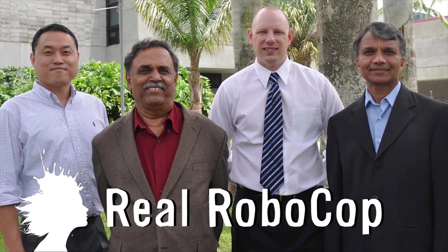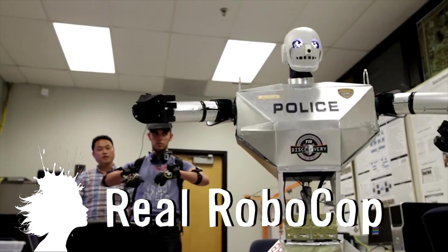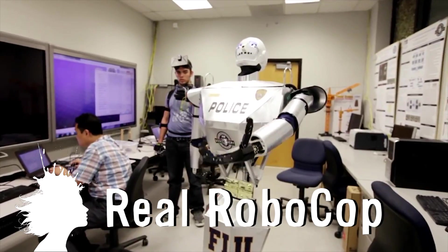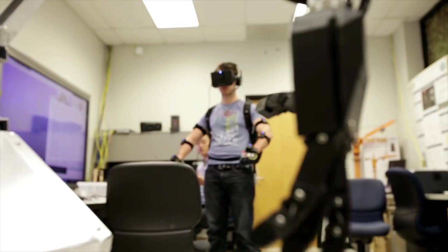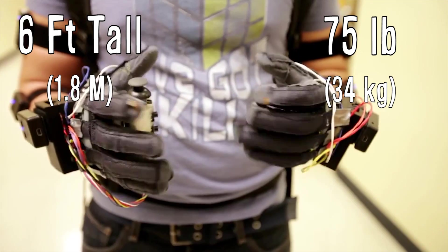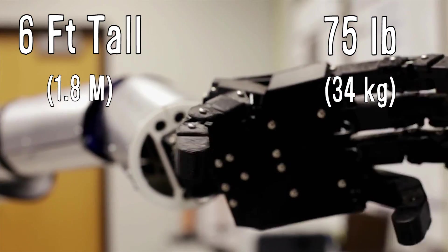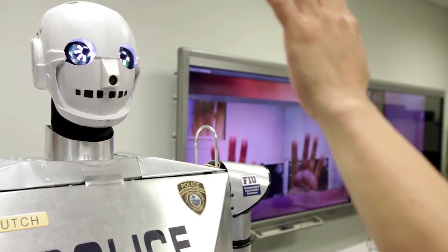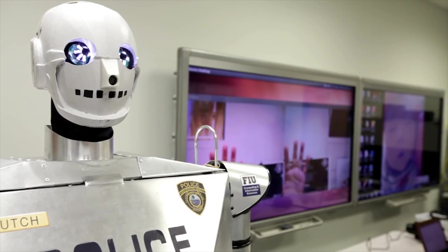The Florida International University Discovery Lab is developing a real RoboCop...sort of. The Telebot prototype is designed to help disabled police officers. The 6 foot tall, 75 pound robot can be controlled remotely by officers. And the head has live video streaming in order to share visual information.